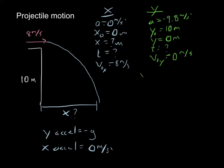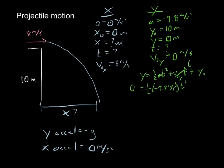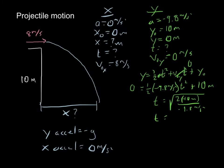Let's start with the y equation: y = ½at² + v₀y·t + y₀. My final y position is zero, so: 0 = ½(−9.8)t² + (0)t + 10. The initial y velocity term drops out, giving us 0 = −4.9t² + 10. Solving for time: t = √(2 × 10 / 9.8), which gives t = 1.43 seconds.